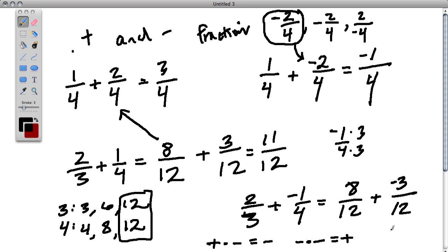So now, we can leave our answer, our sum in terms of twelfths, and just add 8 plus negative 3, which is 5.